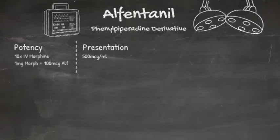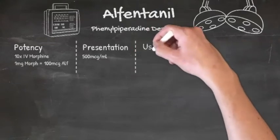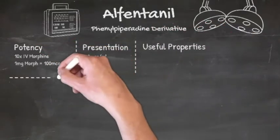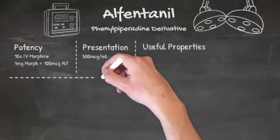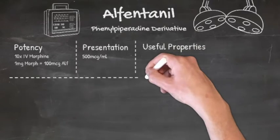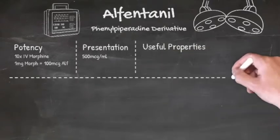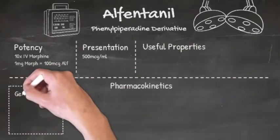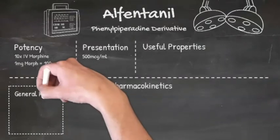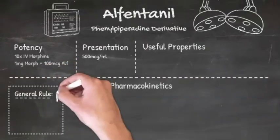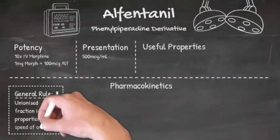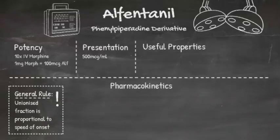We'll go through the pharmacokinetics of alfentanyl and how these relate to its useful properties for anaesthetic practice. As we've discussed in the fentanyl video, speed of opioid onset is generally related to the fraction of it that is unionised, and that's defined by the pKa of the agent and the physiological pH of 7.4.